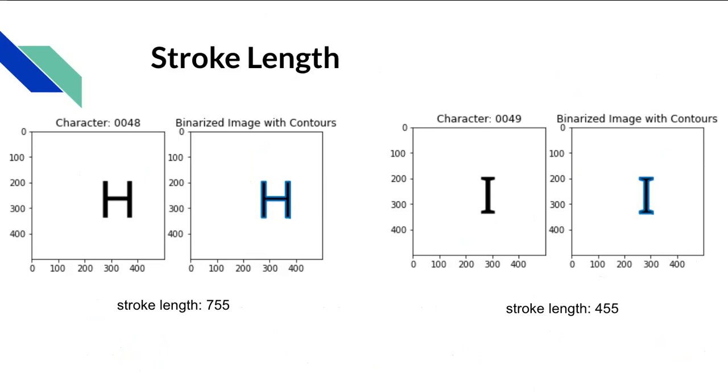To dive into stroke length, the shape within an image really matters. We developed code that helps us visualize these character images and identify their contours. Contours are essentially the outlines of objects within an image. As you can see on the left, we're comparing the letter H with the letter I on the right.